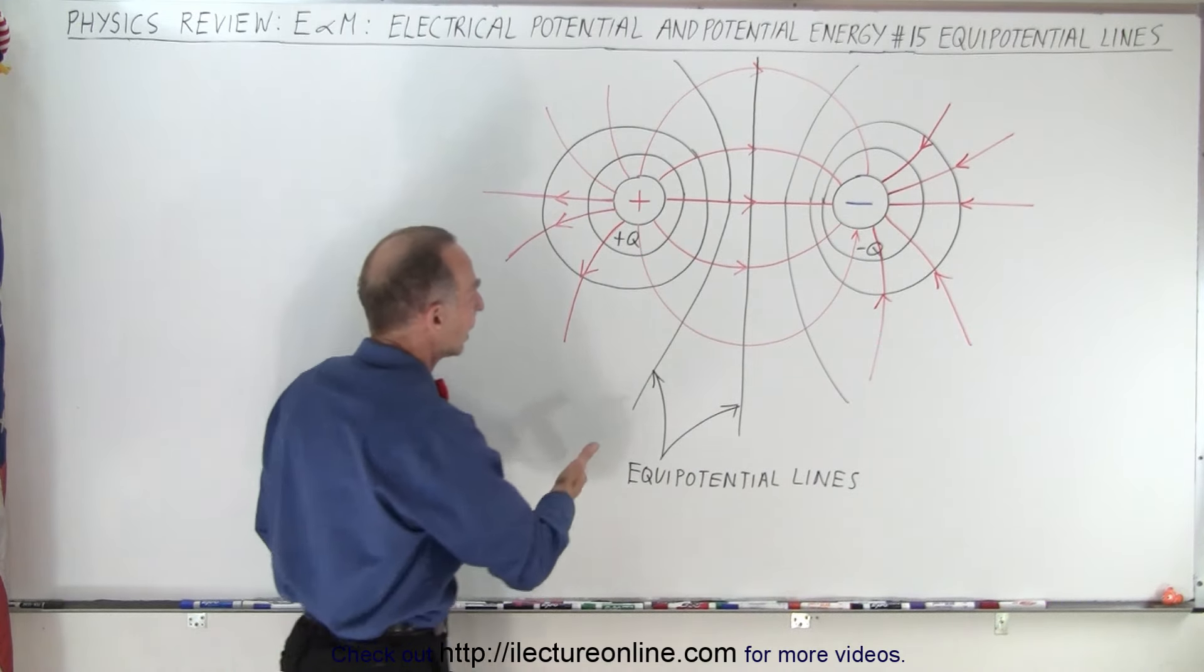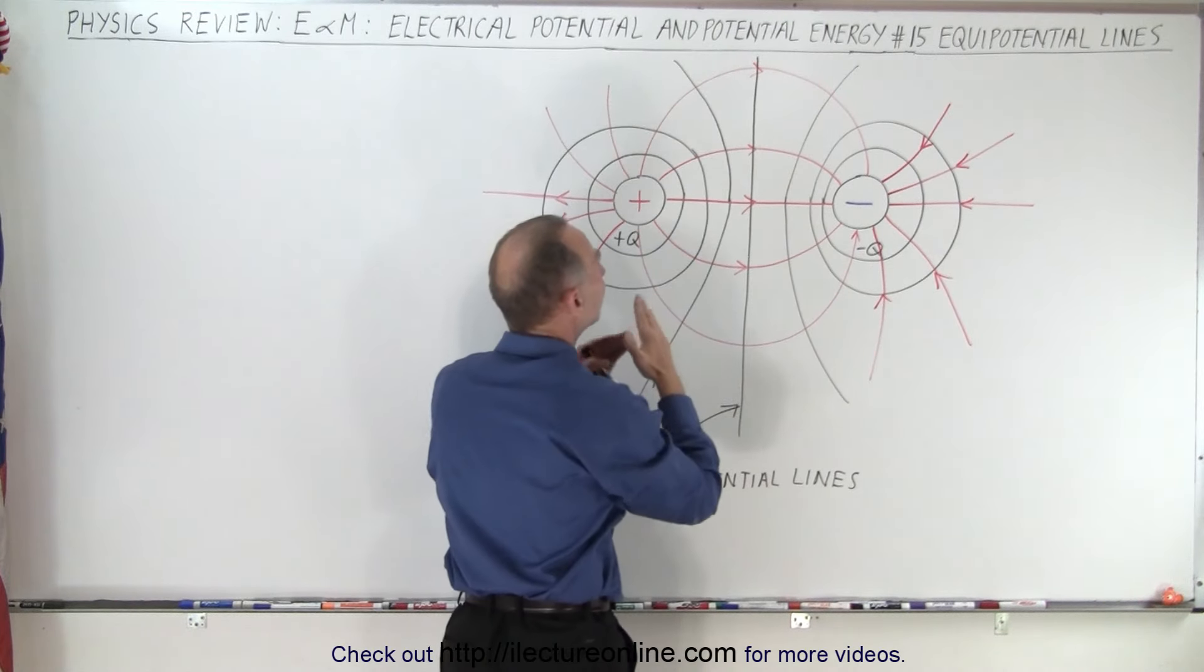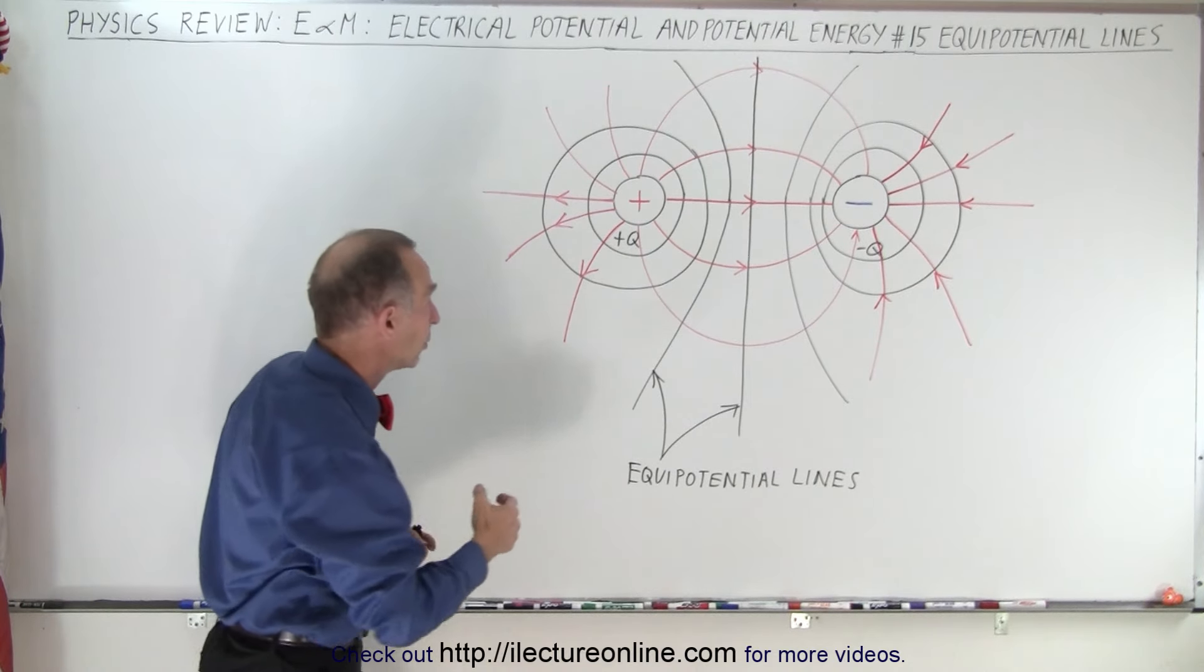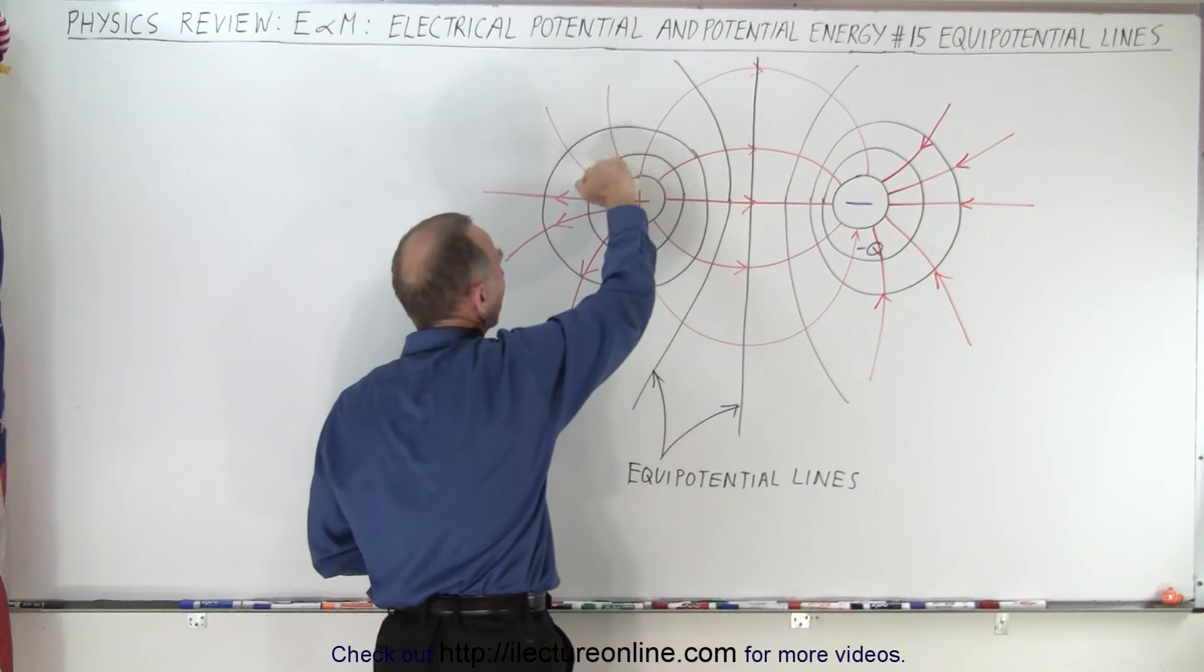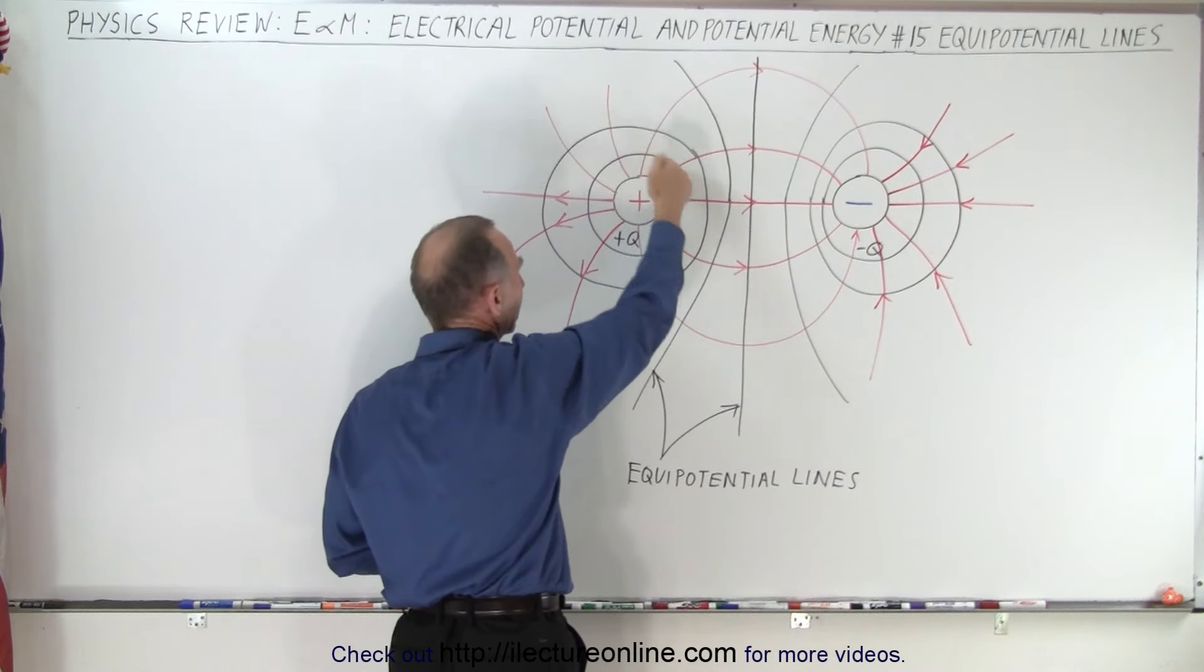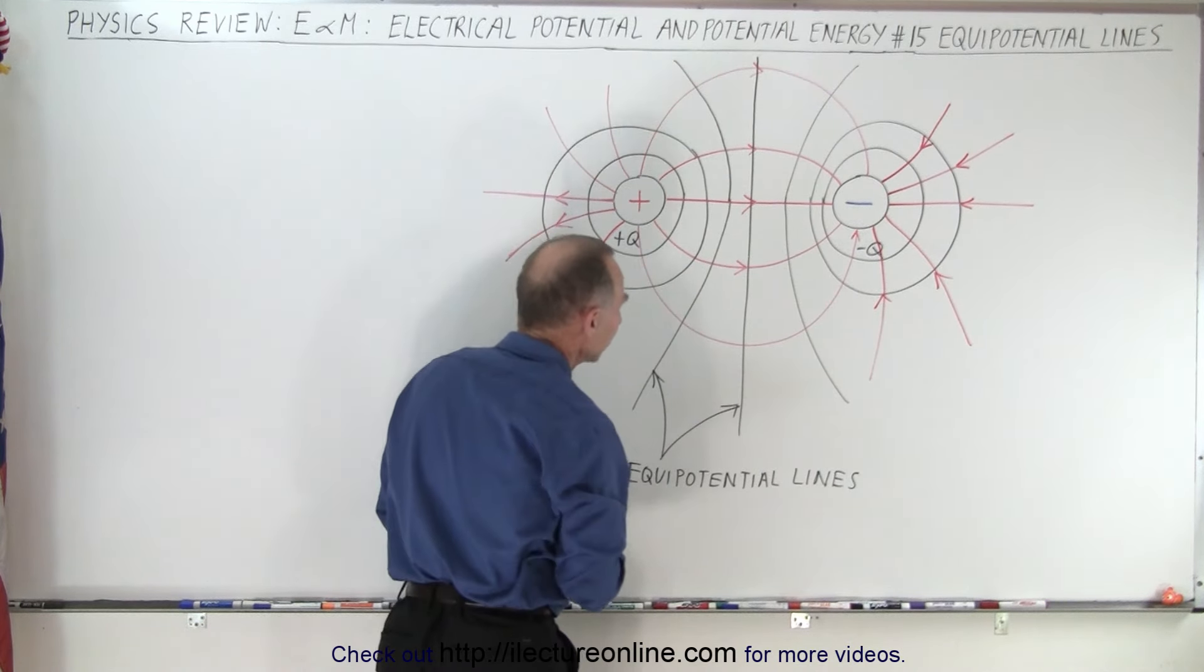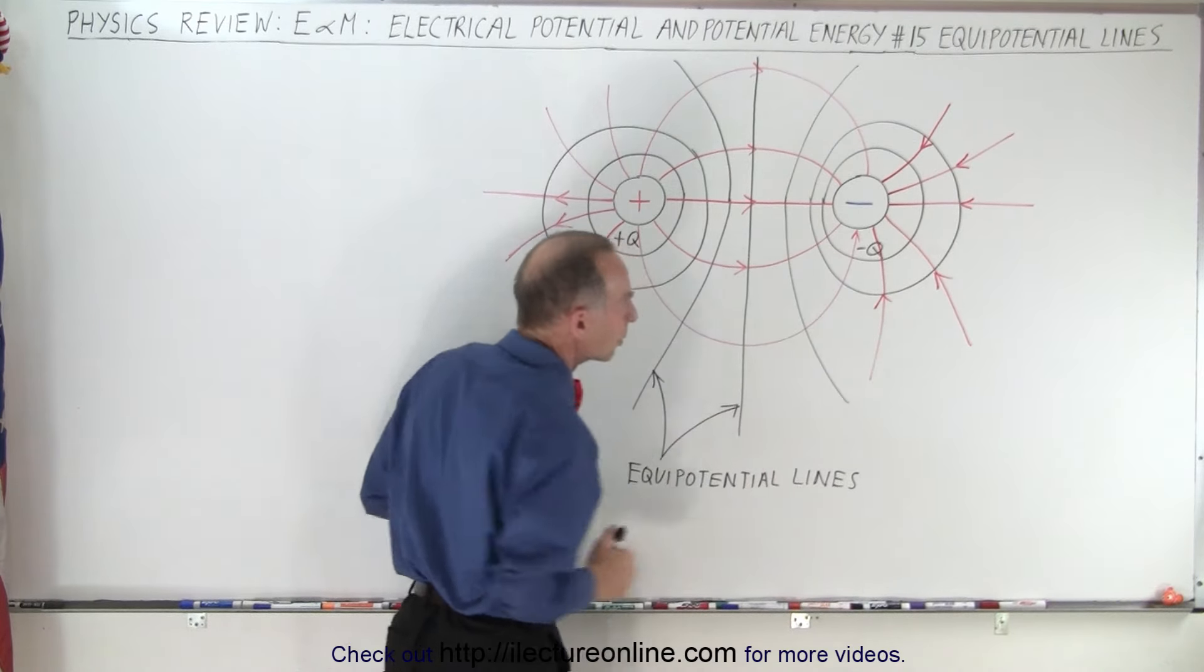You can see that everywhere you look, the black lines cut through the red lines perpendicular to the direction of the electric field. Notice that these lines go around the charge object, but everywhere you look, the black line cuts perpendicular through the red lines, meaning that the equipotential lines are always perpendicular to the electric field lines no matter where you go.